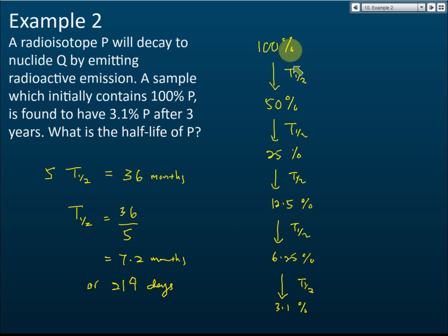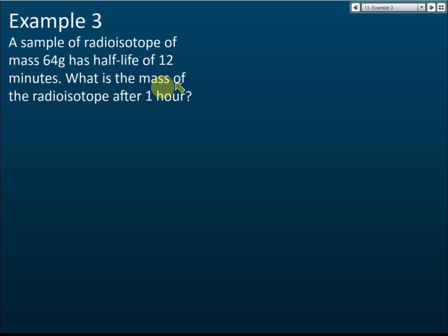And from here we can see it takes 5 half-lives, right? From 100% to 3.1%. First half-life, second half-life, third half-life, fourth, and fifth half-life. So 5 half-lives equals 36 months, or you can write 3 times 365 days—1,095 days. And therefore each half-life is 7.2 months or 219 days.